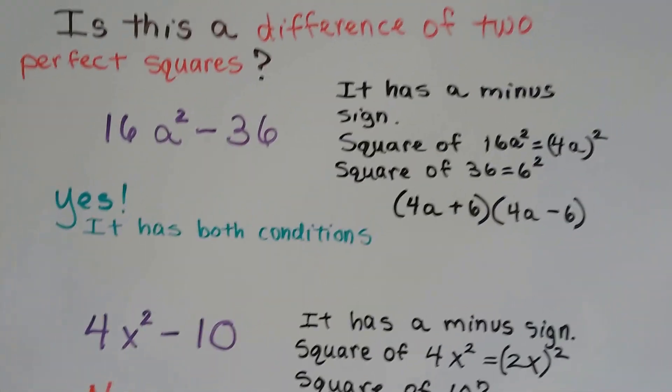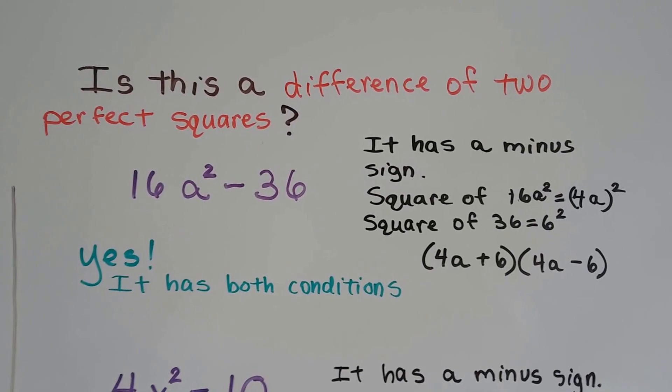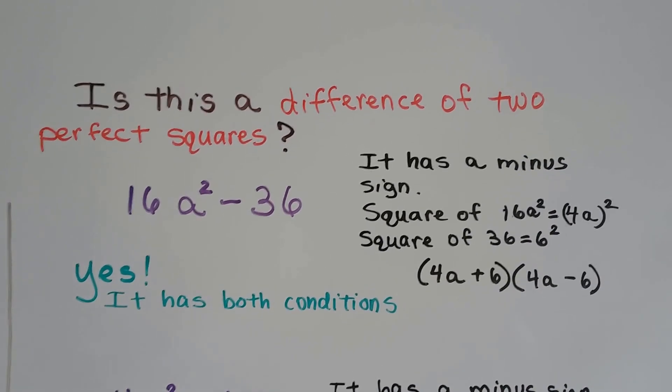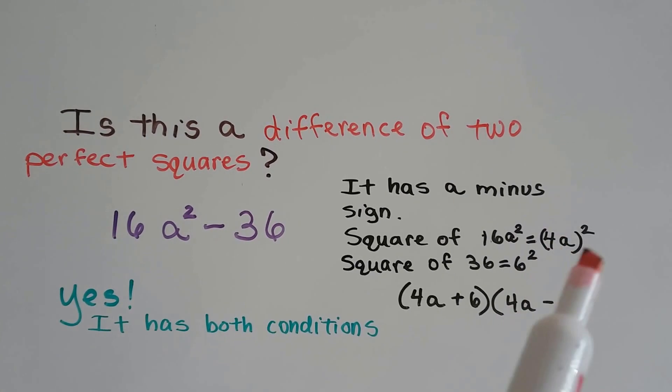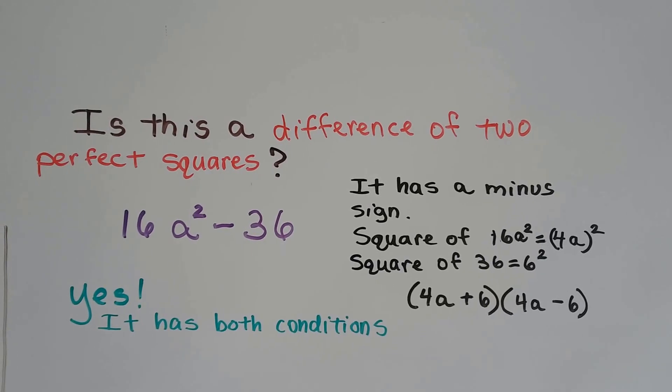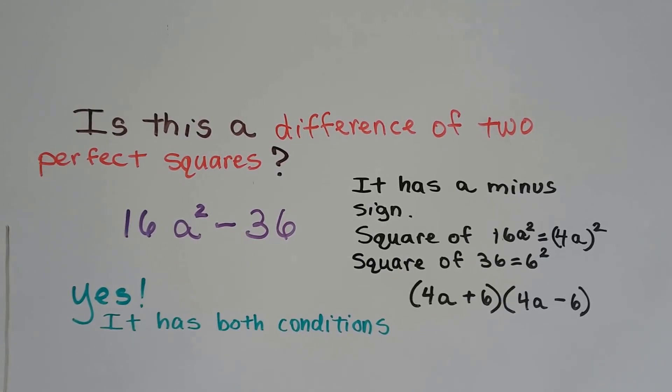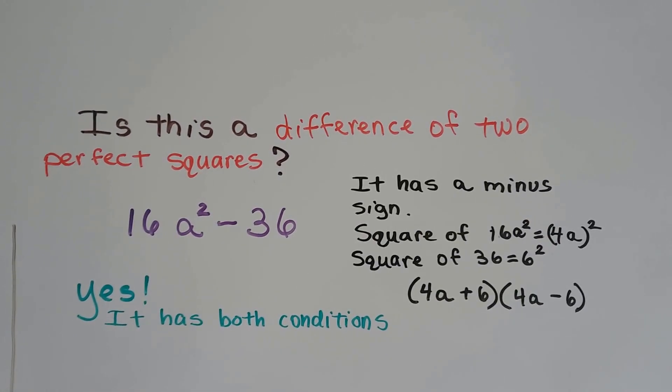So is this a difference of two squares? The difference of two perfect squares? It has a minus sign and the square of 16a to the second power is 4a in parentheses with the square on the outside. The square of 36 is 6 squared. So yes, it has both conditions. They have different signs. That's a positive, that's a negative, and they're both squares.